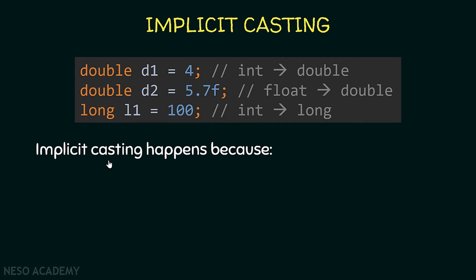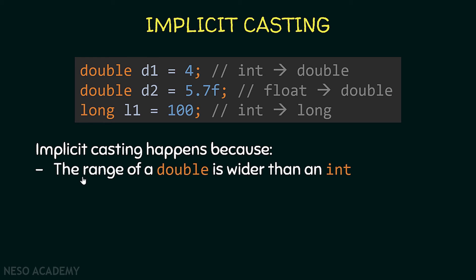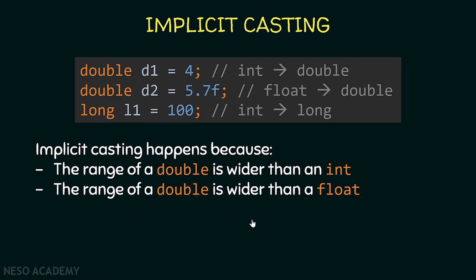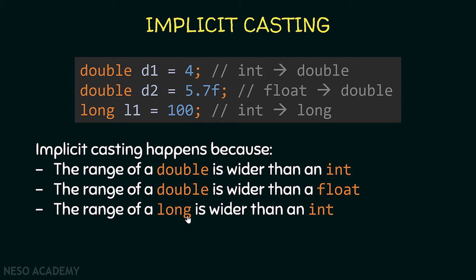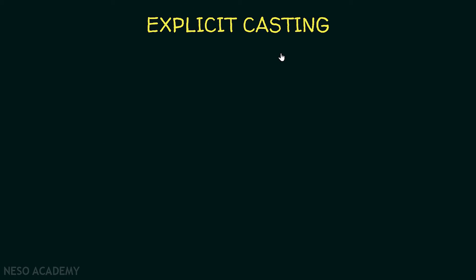A small summary: implicit casting happens because the range of a double is wider than an integer, so a double can store an integer without problems. Also, the range of a double is wider than a float, and the range of a long is wider than an integer — so all these conversions happen automatically.